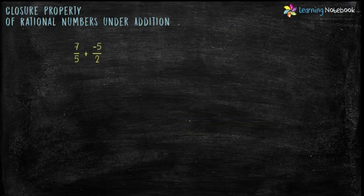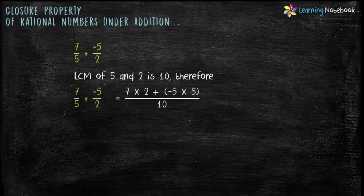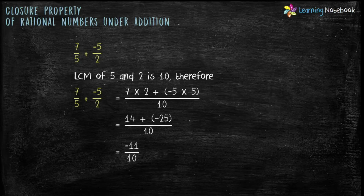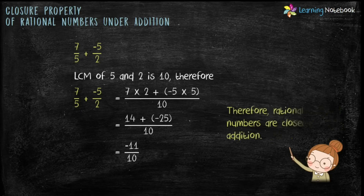Let's see one more example. Add two rational numbers 7 by 5 and minus 5 by 2. LCM of 5 and 2 is 10. Therefore sum equals 7 into 2 plus minus 5 into 5 divided by 10, which is 14 plus minus 25 by 10. We get the sum as minus 11 by 10. So again, when we add two rational numbers the sum is also a rational number. Therefore rational numbers are closed under addition.